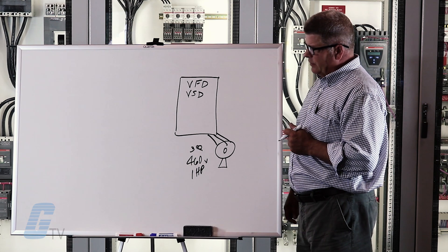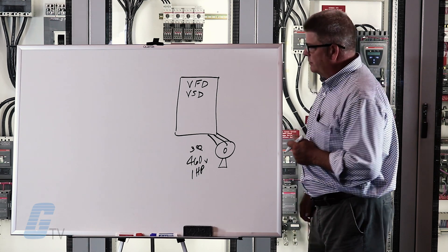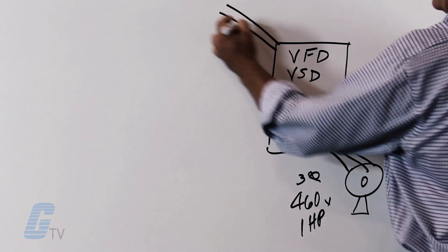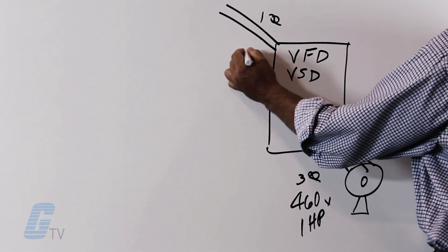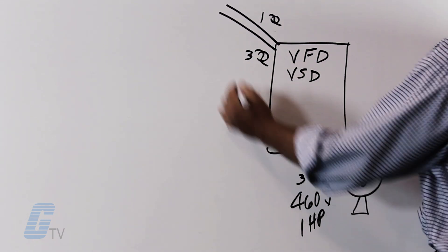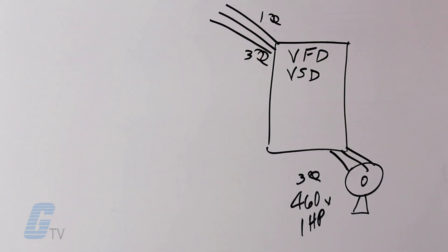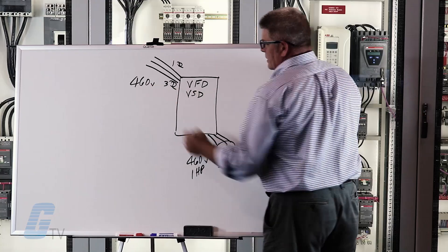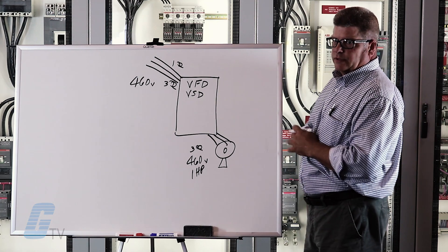Next thing you need to think about is what your supply voltage is to run this particular drive. Variable frequency drives can be run off single phase or three phase. In our case today we are going to run it off 460 volts three phase. That is what our customer has available in his particular building.